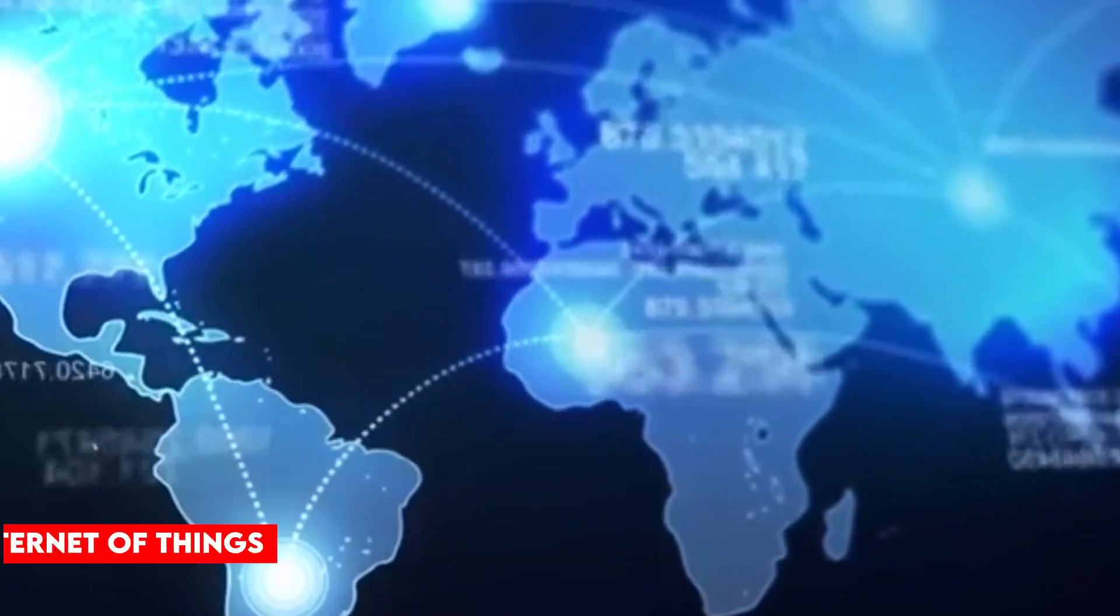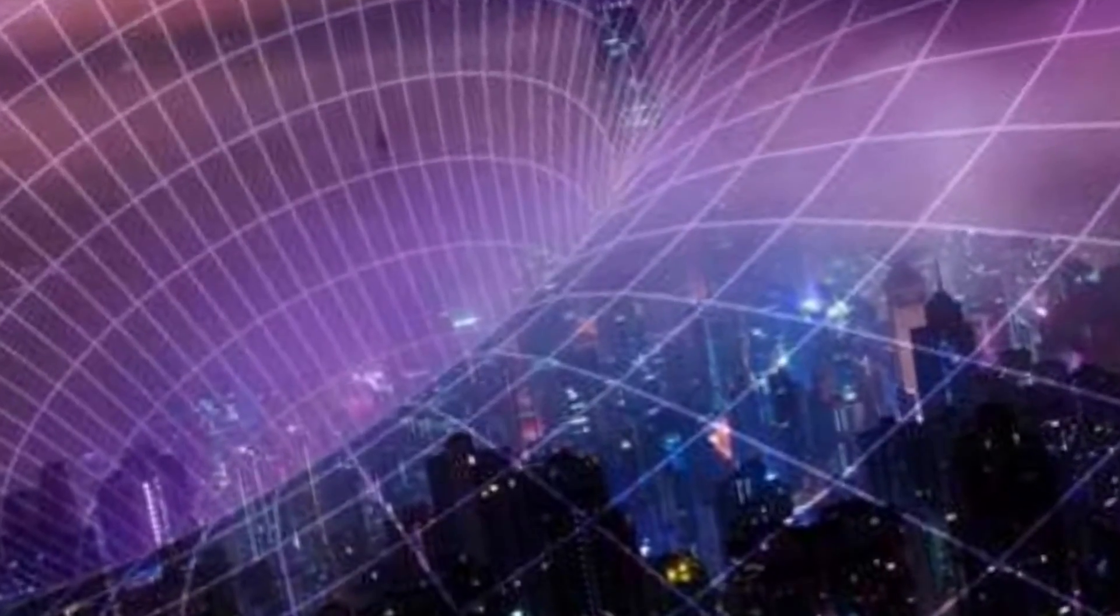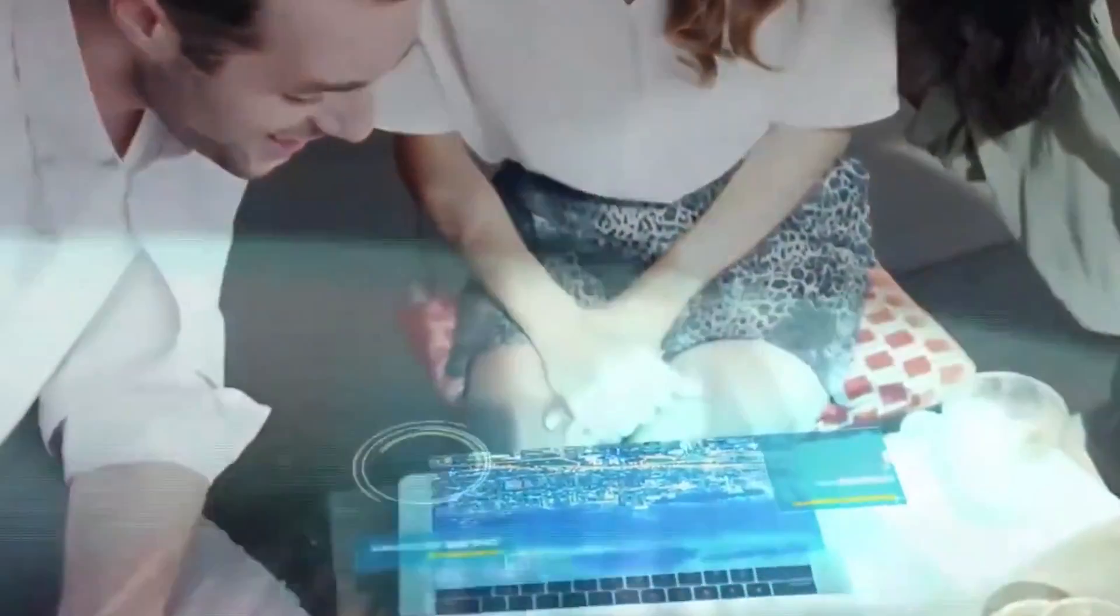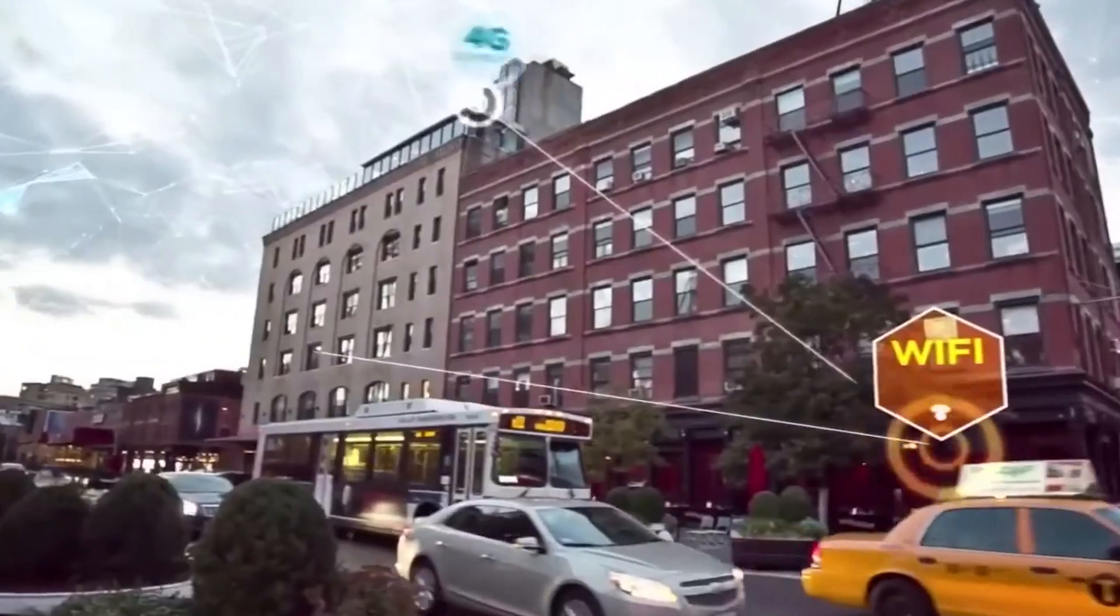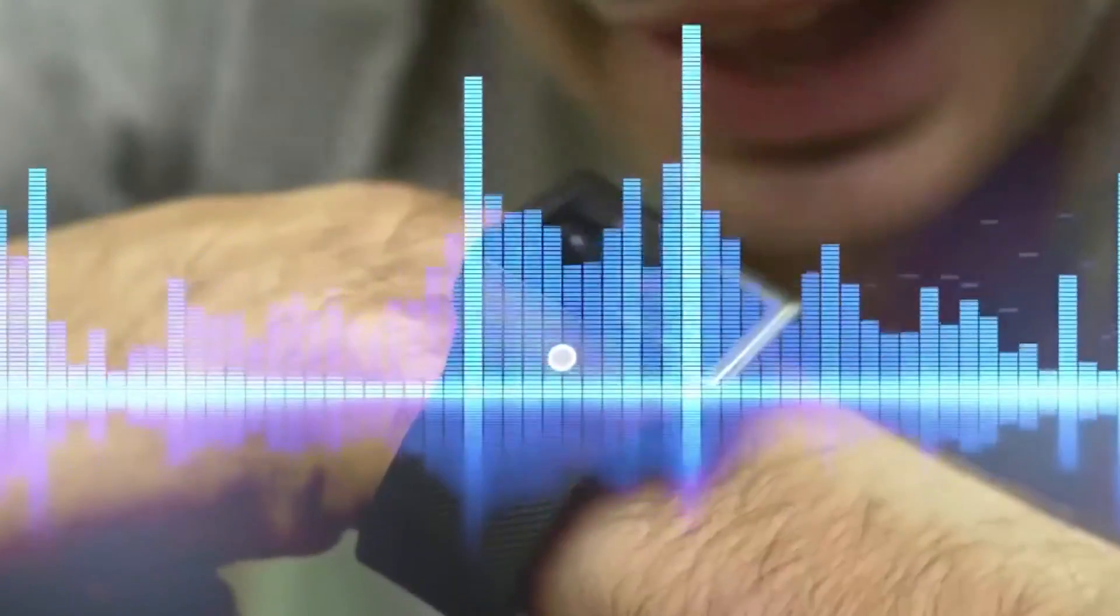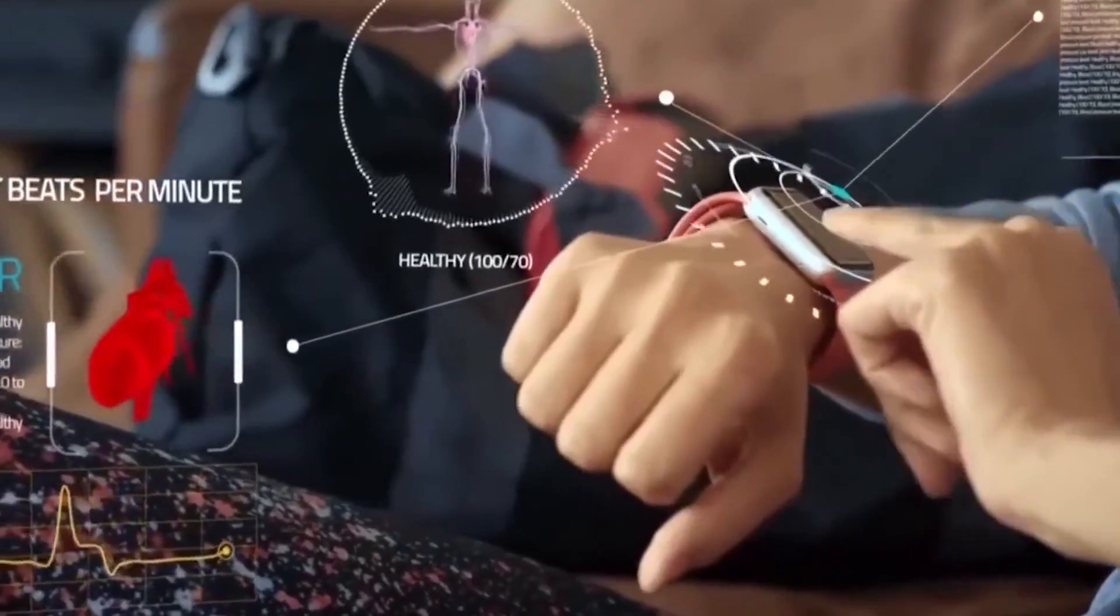5G and the Internet of Things. The Internet of Things involves connecting different things like software, technology, and sensors to exchange data over the internet or another communication network. In most cases, these devices are connected through the 5G Internet.